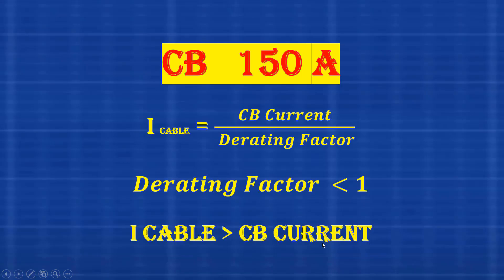Since the derating factor is always less than 1, this means the cable current is always higher than the circuit breaker current. This makes sense because the circuit breaker must protect the cable, therefore the cable must carry a current higher than the breaker's rating.